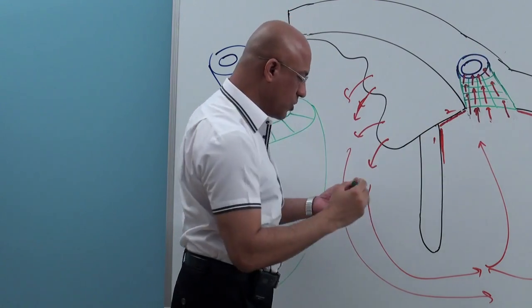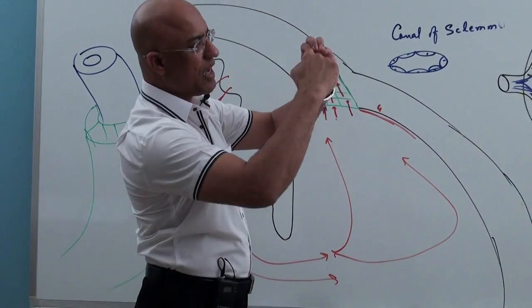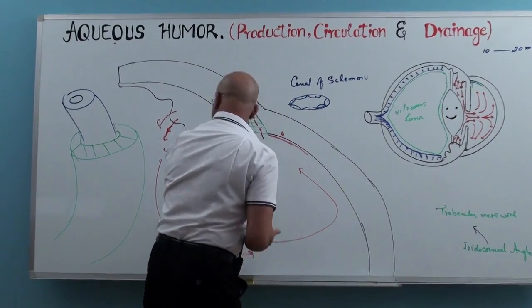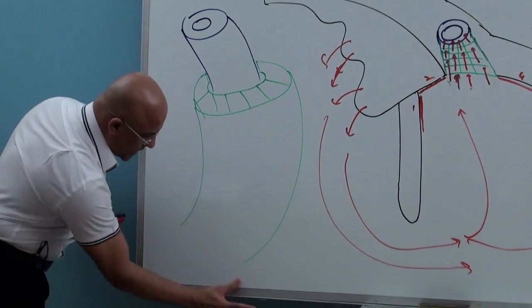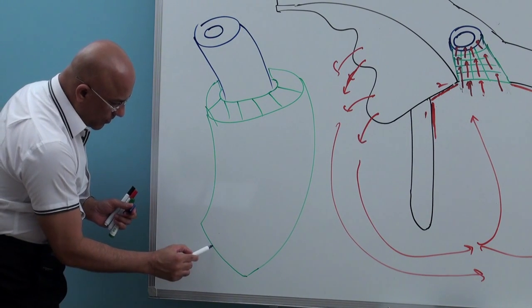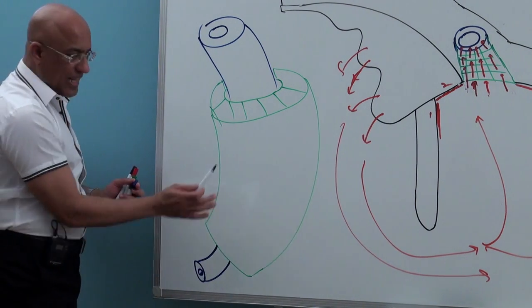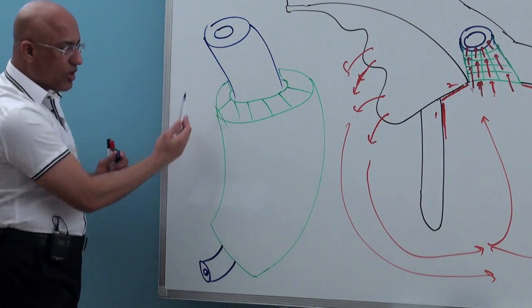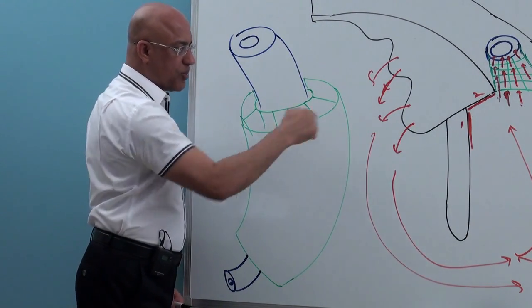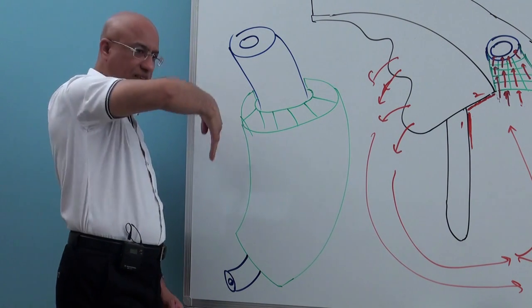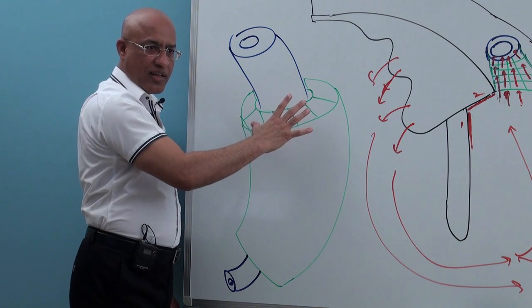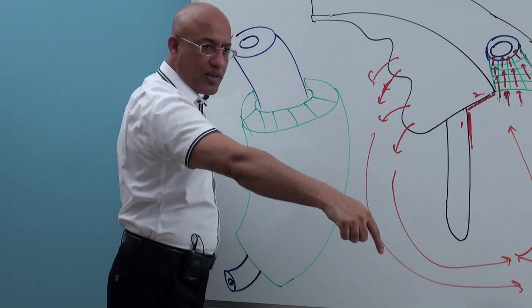I want to make this clearer with a diagram. Here is the canal of Schlemm — it runs circular at the corneoscleral junction inside. Around it is the trabecular meshwork. The canal of Schlemm is not just a cut section; actually, if the eyeball is like a sphere, the canal of Schlemm is like a circle at the corneoscleral junction inside.